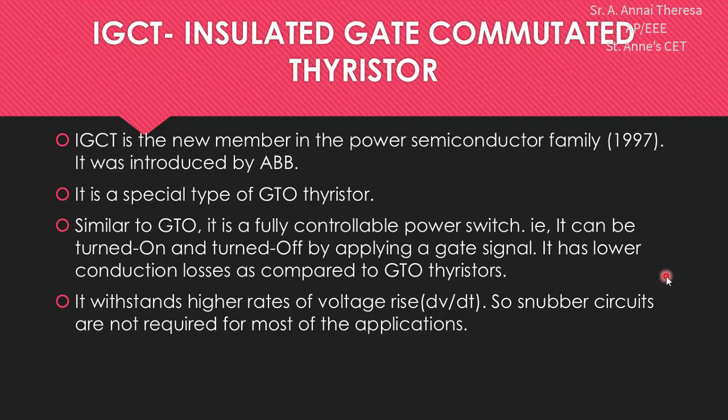In this video, we are going to discuss about IGCT, that is Insulated Gate Commutated Thyristor. IGCT is the new member in the power semiconductor family. It was invented in 1997 and introduced by ABB. It is a special type of GTO thyristor.